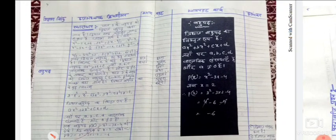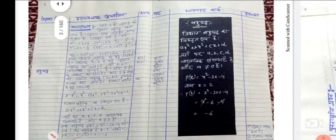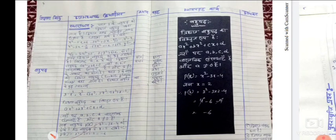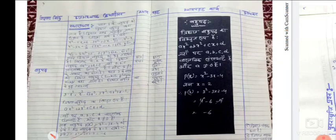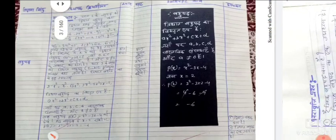After that, blackboard work: Trighat bahupad ka vistrit roop (expanded form) is ax³ + bx² + cx + d, where a, b, c, d are real numbers and a ≠ 0. And p(x) = x² - 3x - 4, when x = 2: p(2) = 2² - 3×2 - 4. So 2² = 4, minus 3×2 = 6, minus 4. So the result is minus 6.